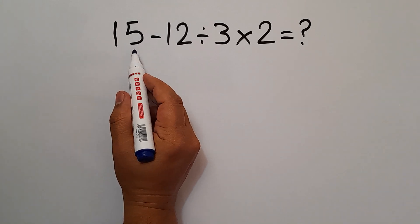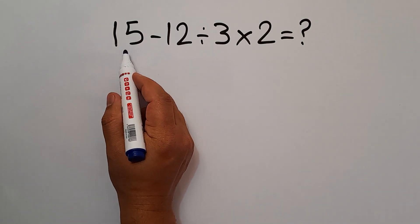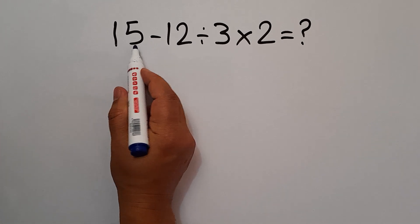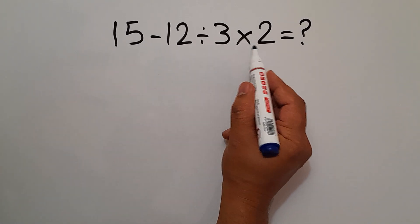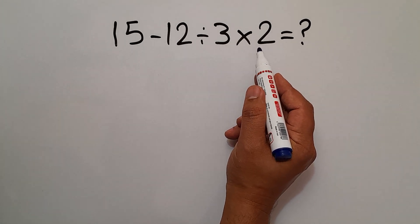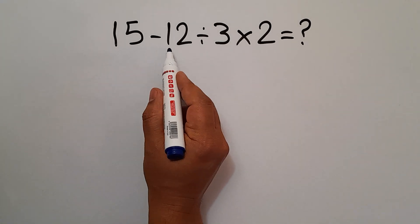Hey guys, welcome to MathJoy. In this video we want to find the value of this expression: 15 minus 12 divided by 3 then times 2. Are you ready to solve? Let's go! In this expression we have one subtraction, one division, and one multiplication.